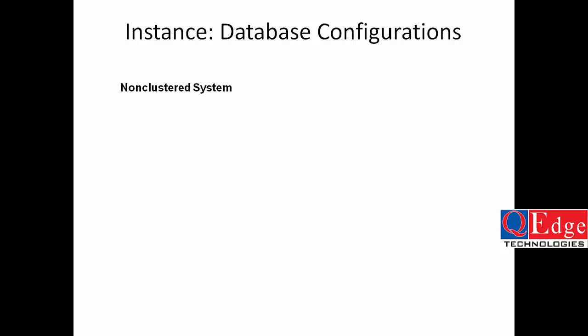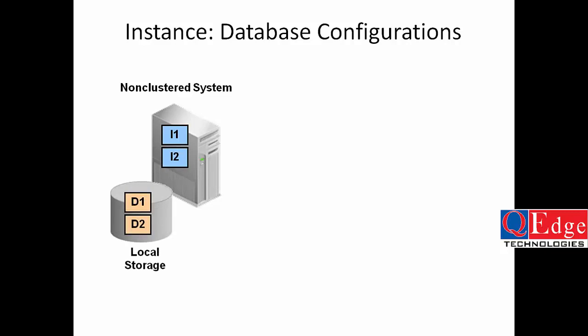In more detail: a single instance database is also known as a non-cluster system. One server can have multiple databases, but each database has its own instance — for example, I1 is the instance for D1 database and I2 is the instance for D2 database. Every database has its own instance — that is why it is called single instance database.